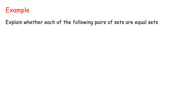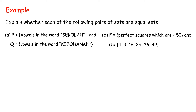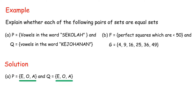Example: explain whether each of the following pairs of sets are equal sets. A: P = {vowels in the word 'circle'} and Q = {vowels in the word 'kirjohannam'}. Solution A: P = {E, O, A} and Q = {E, O, A}. Each element in set P is equal to each element in set Q. Thus, P = Q.